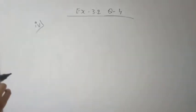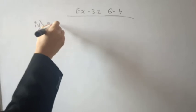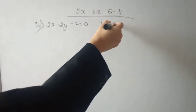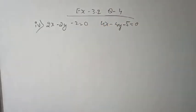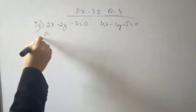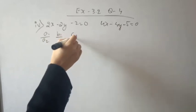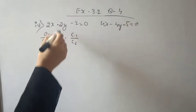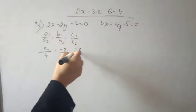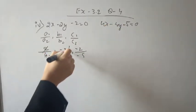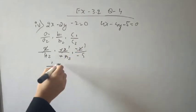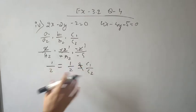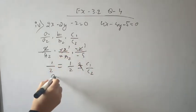Next, the last question — question number 4, fourth pair of linear equations. The equations are 2x minus 2y minus 2 is equal to 0, and 4x minus 4y plus 5 is equal to 0. Compare a1/a2, b1/b2, and c1/c2 to check consistent or inconsistent. Here a1/a2 is 1/2, b1/b2 is 1/2, but c1/c2 is not equal — so a1/a2 equals b1/b2 but is not equal to c1/c2.